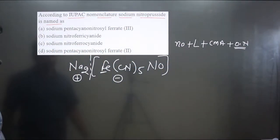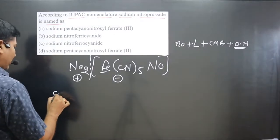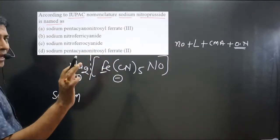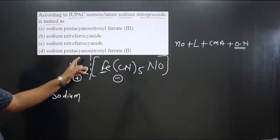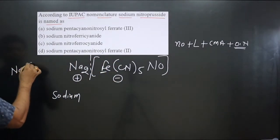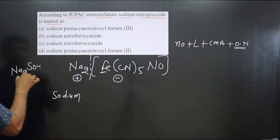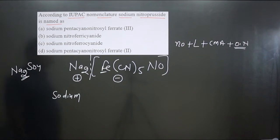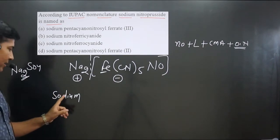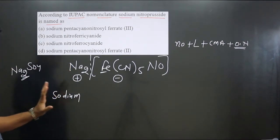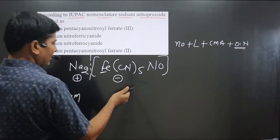We have sodium as the cationic part — we write sodium, we do not say disodium. This is because the subscript 2 comes from balancing the charge. Just as Na₂SO₄ is called sodium sulfate, not disodium sulfate, because the 2 arises from charge balancing. So the counter ion is simply named sodium.